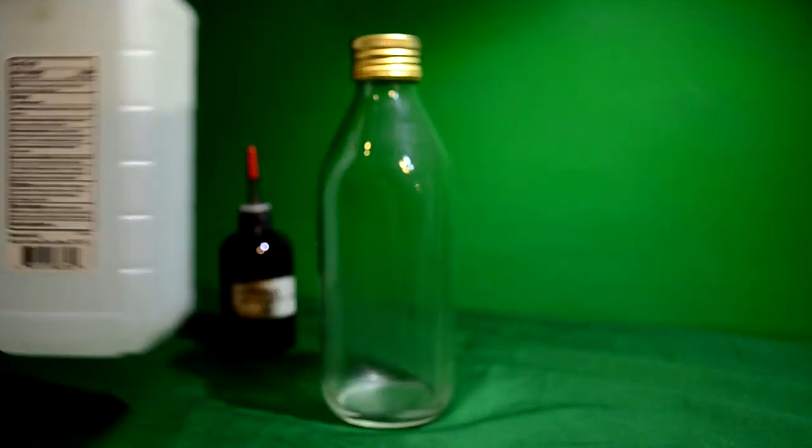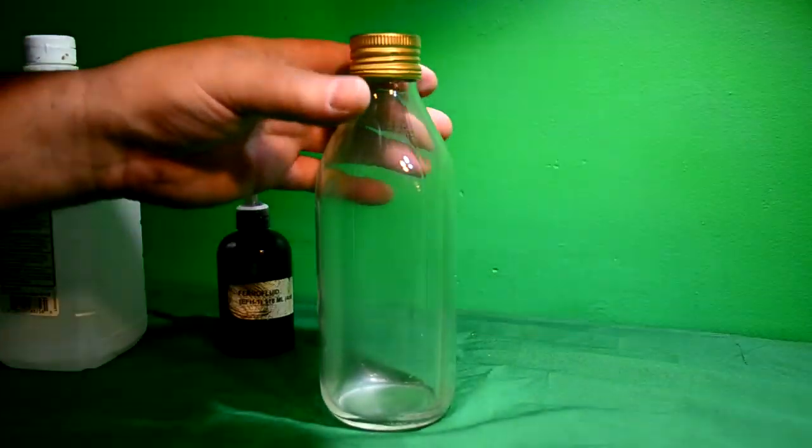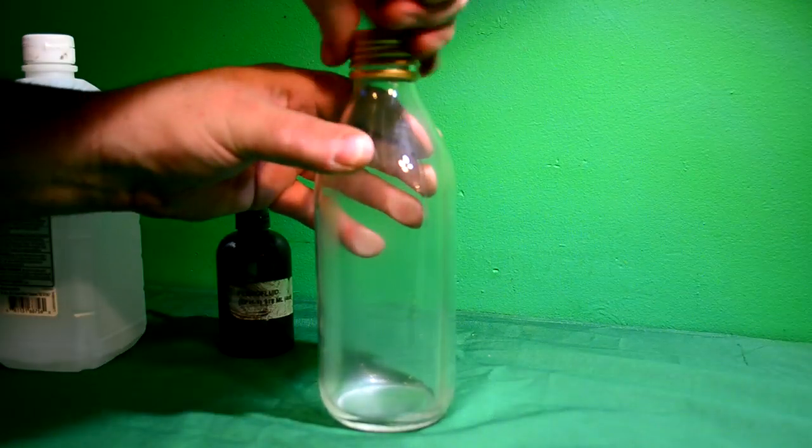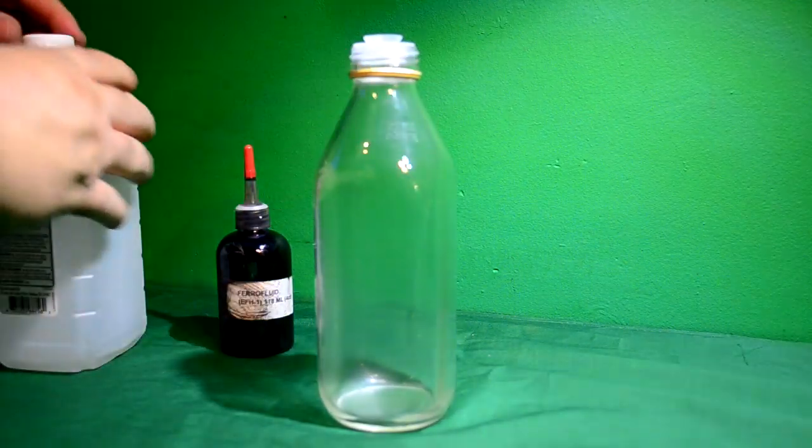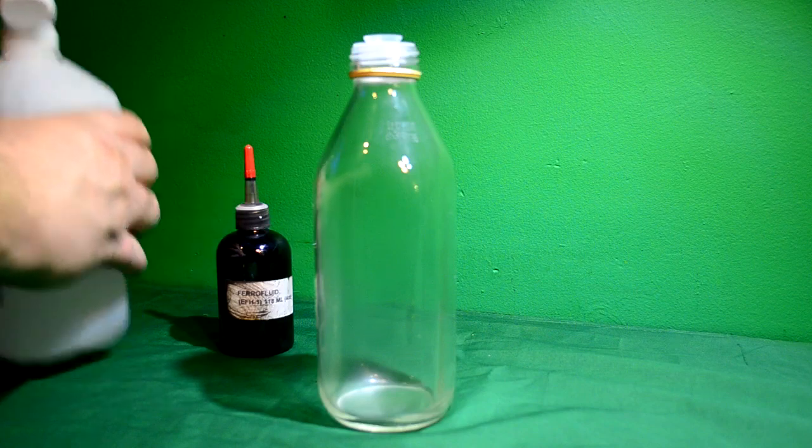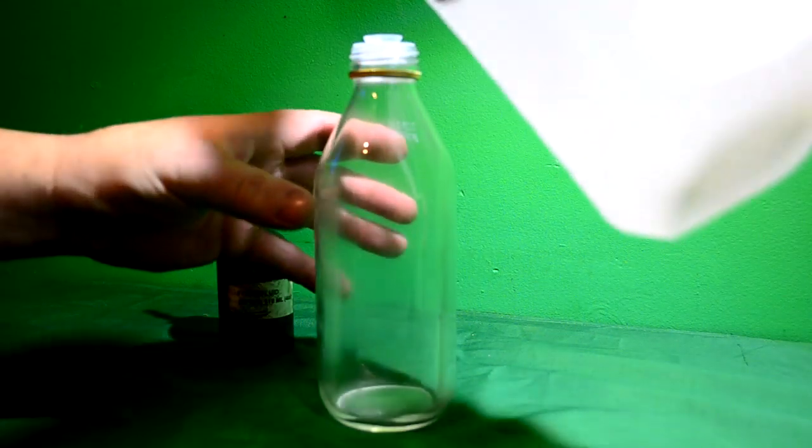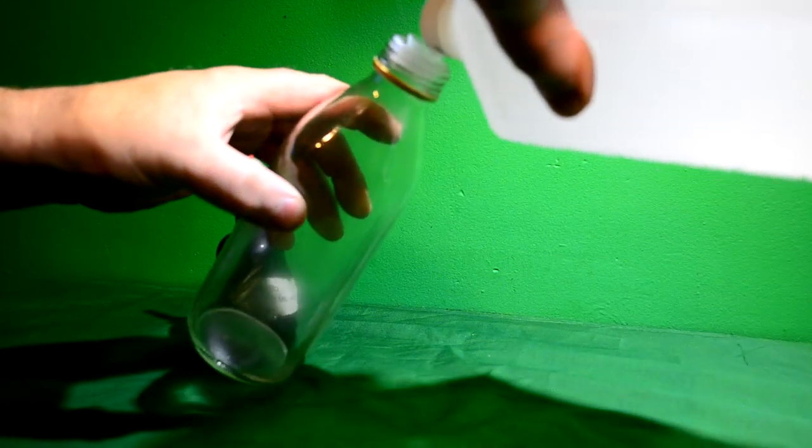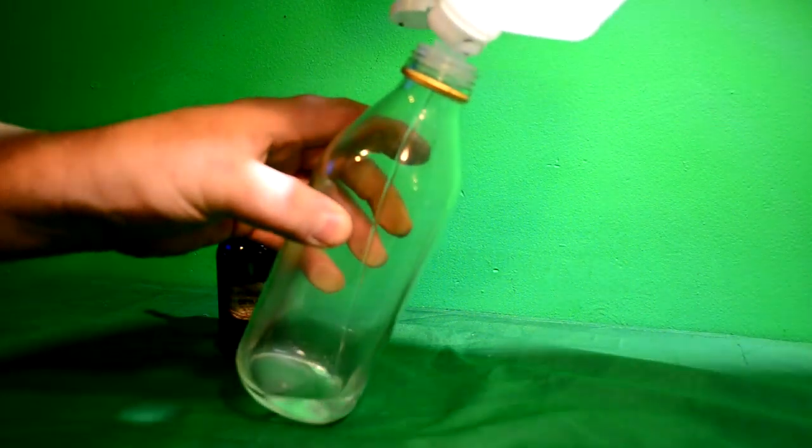What you'll end up doing is just basically take the lid off your jar, make sure the inside's clean and dried out. You don't want no impurities in it. Pour your alcohol in. And what I did was fill it up to probably a half an inch from the top.